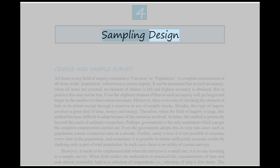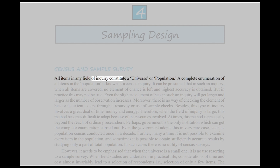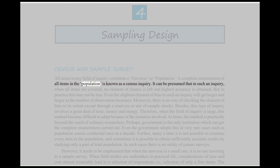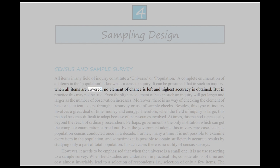Sampling Design: Census and Sample Survey. All items in any field of inquiry constitute a universe or population. A complete enumeration of all items in the population is known as a census inquiry. It can be presumed that in such an inquiry, when all items are covered, no element of chance is left and highest accuracy is obtained.